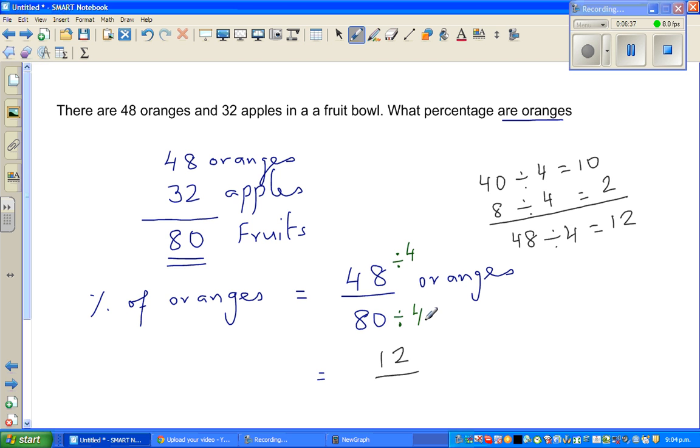And 80 divided by 4 should not be difficult. So you are thinking, what is 8 divided by 4? Which is 2, so it is 20. Now, if you want to write this out of 100, well, 20 goes in 100 how many times? 20 goes in 100 five times. So if you multiply the denominator with 5, also multiply the numerator with 5. So this is 60 out of 100. And this as a percent is 60%.